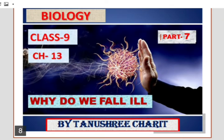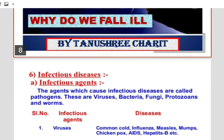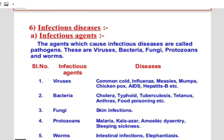Today we will discuss the infectious agents that cause communicable or infectious diseases, and the mode of spread of infectious diseases. Let us start with the infectious agents first. The agents which cause infection or infectious diseases are called pathogens.